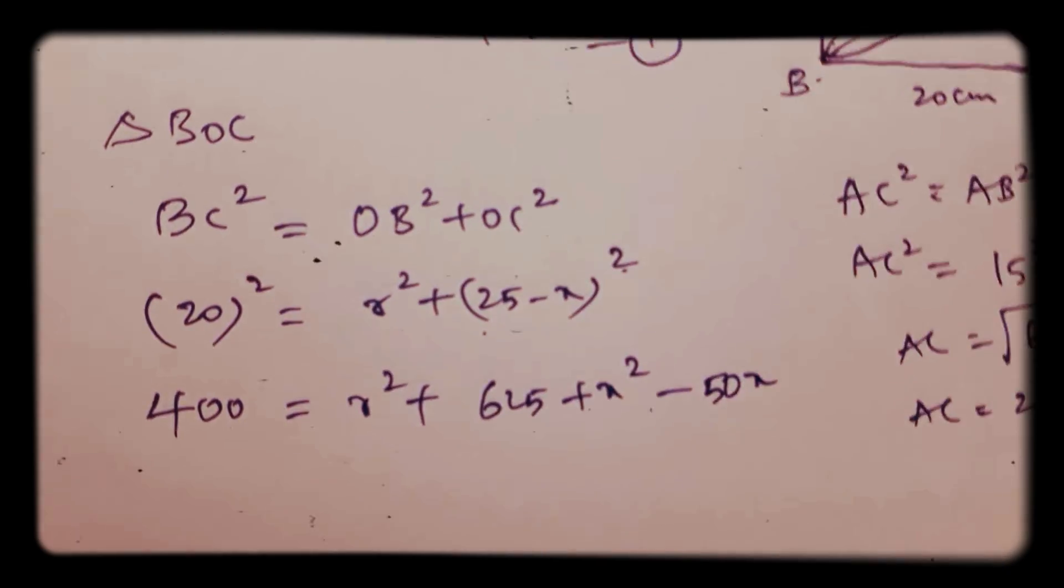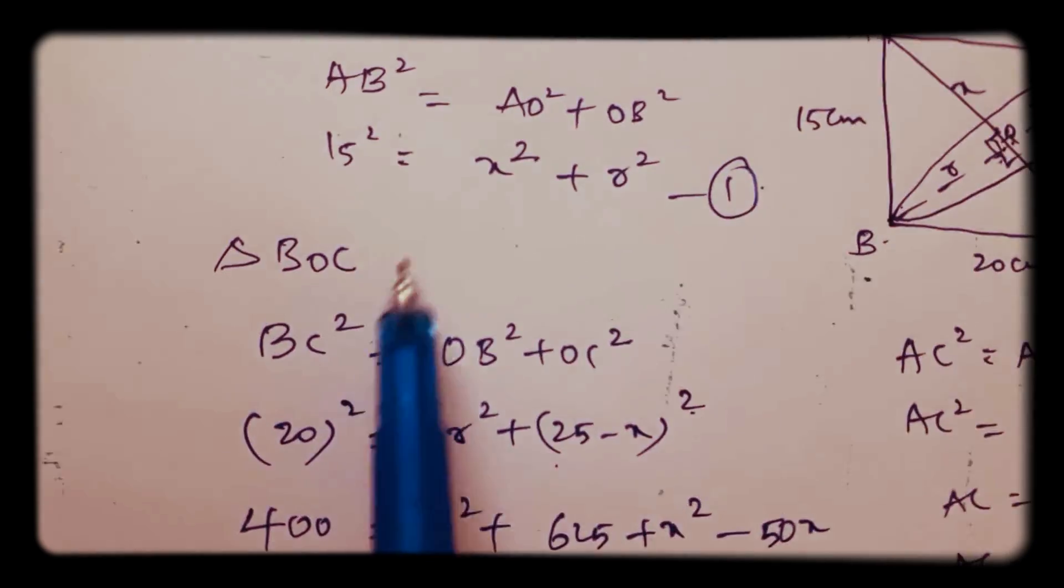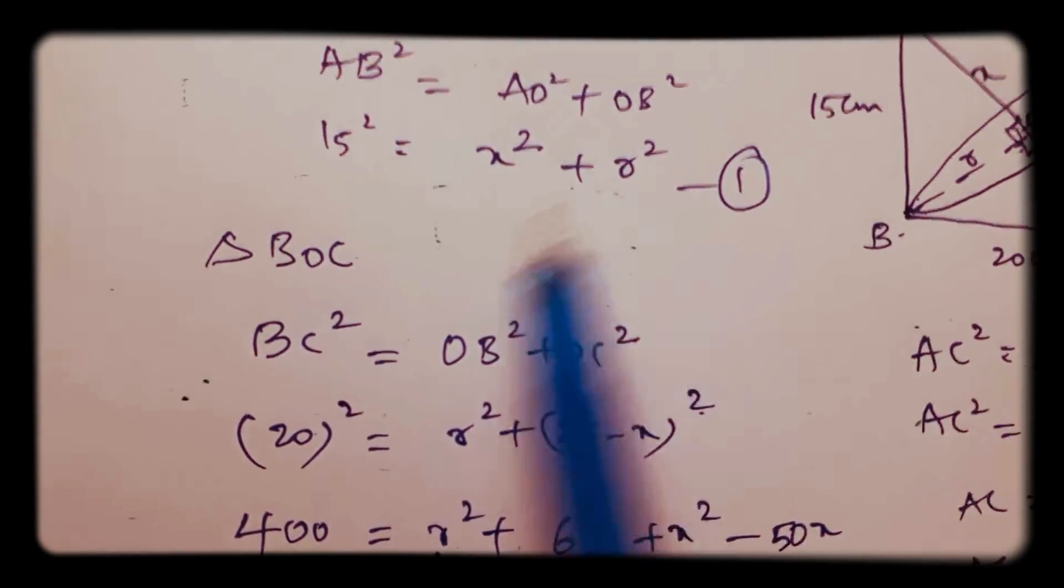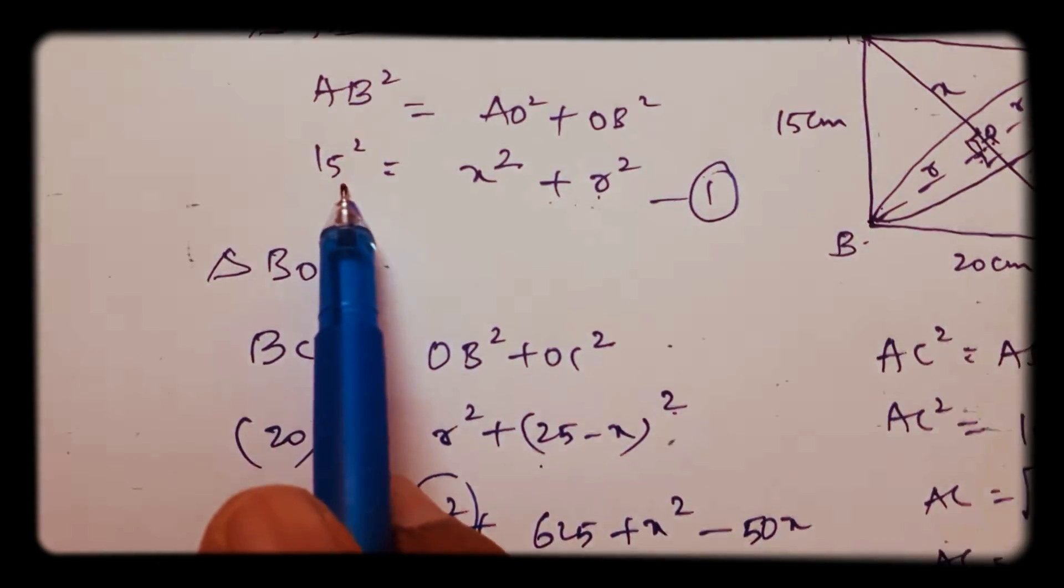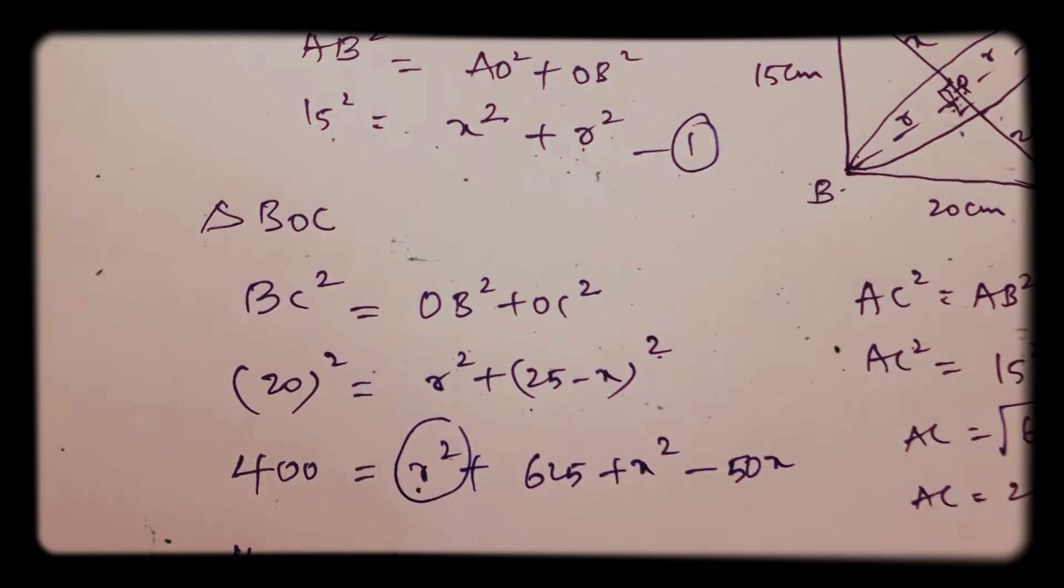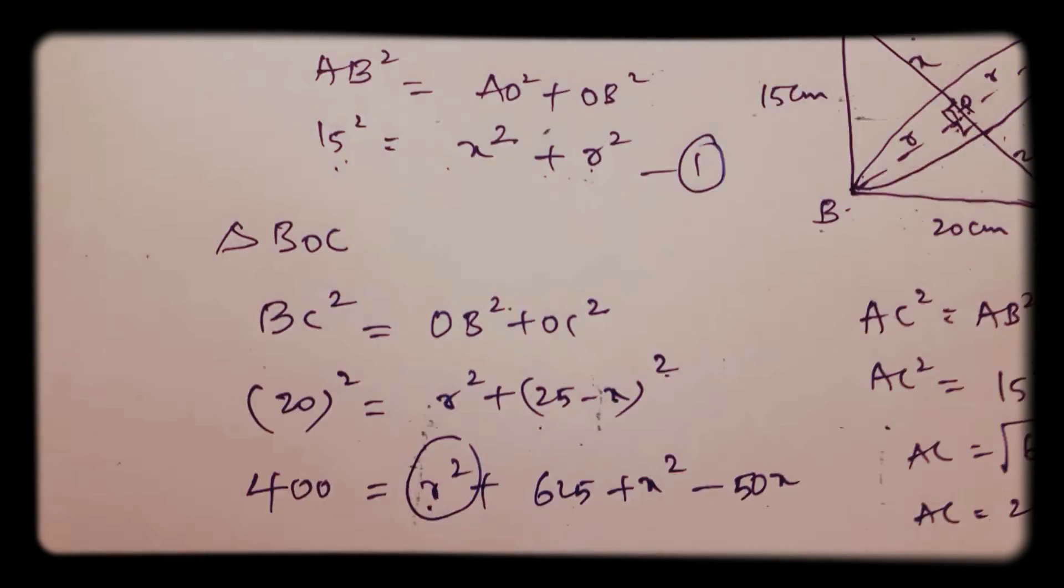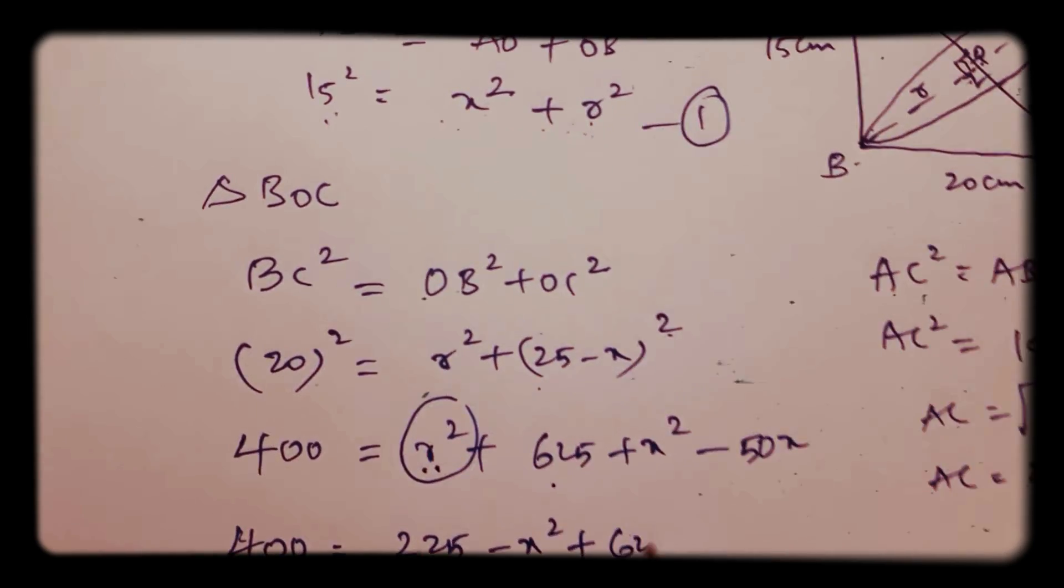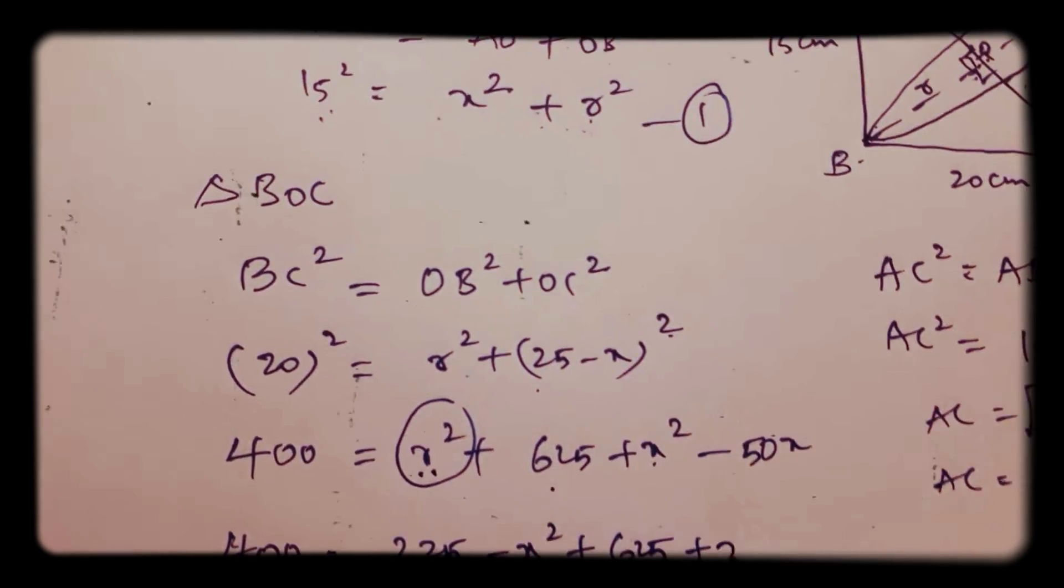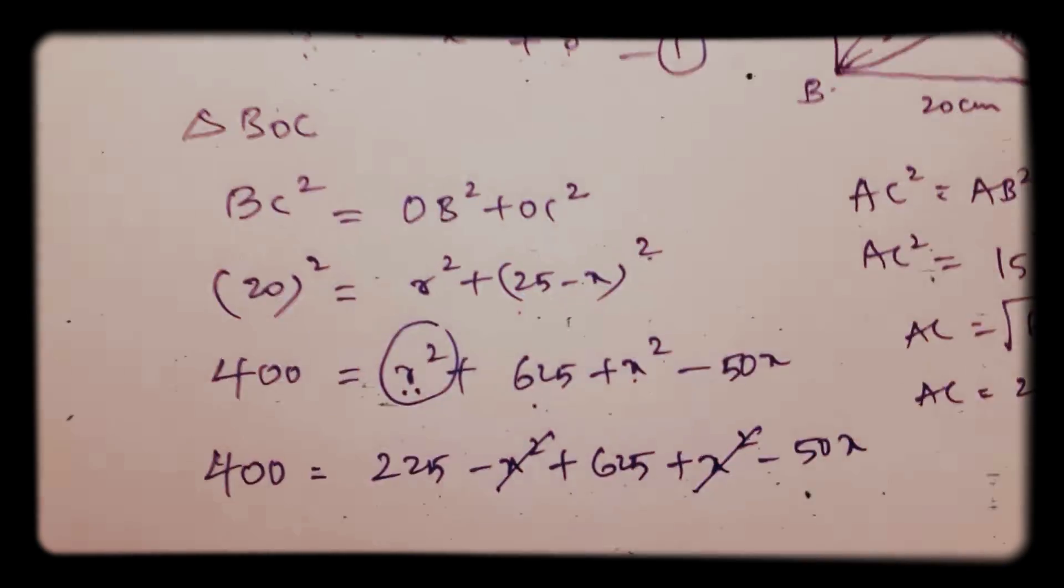Minus 50X, so R square, what is the value from here? 400 equals R square is 15 square minus X square, so 225. 15 square is 225 minus X square is 225 plus 625 plus X square minus 50X.